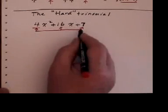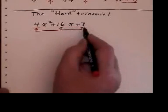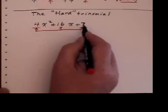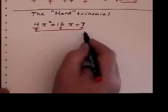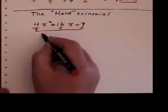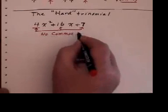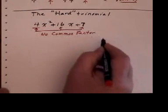So the hard trinomial, we cannot take out a common factor of 4, because 4, although it goes into there and into there, 4 does not go into there. So you have no common factor to begin with. So that's sort of the definition of a hard trinomial, that there is no common factor.